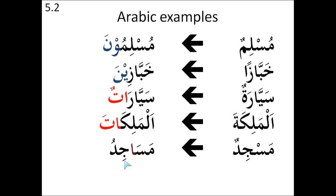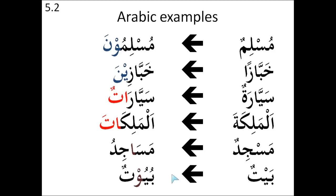But what about the word 'masjid'? It's not 'masjidun' or 'masjidat' — it is 'masajidu'. We have a letter inserted into the original four letters of the word. You have the mim, the sin, but between the sin and the jim, now we have an alif, and then the dal. Likewise, 'bait' does not become 'baitun' or 'baitat', but 'buyut'. Again, we have the original letters ba, ya, but now between the ya and the ta, we have a waw. The first four types are more regular, and the last two are irregular.